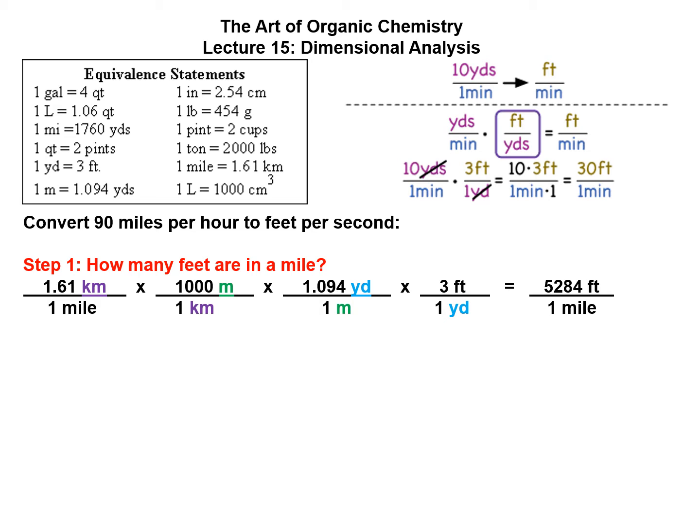We set up the problem so kilometers cancel out in purple, meters cancel out in green, and yards cancel out in blue. And what we're left with is 1.61 times 1,000 times 1.094 times 3 equals 5,284 feet per mile. That's the first step. So now we know how many feet there are in a mile.